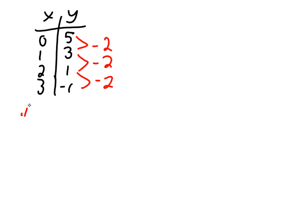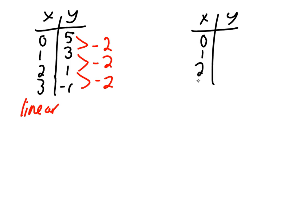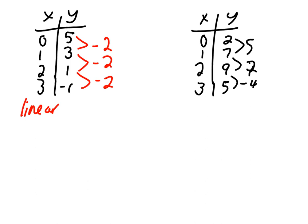If we get the same number every time, it tells us that the equation or the relationship is linear. So we know right away that this one is linear, compared to this one, which has different numbers and is nonlinear.